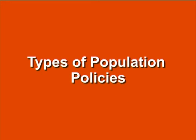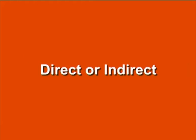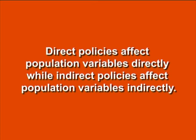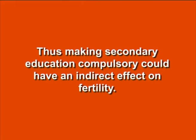Population policies can be of various types depending upon their purpose. Direct policies affect population variables directly, while indirect policies affect population variables indirectly. For example, encouraging immigration can increase growth rates. The rising levels of education usually result in lower fertility, thus making secondary education compulsory could have an indirect effect on fertility.